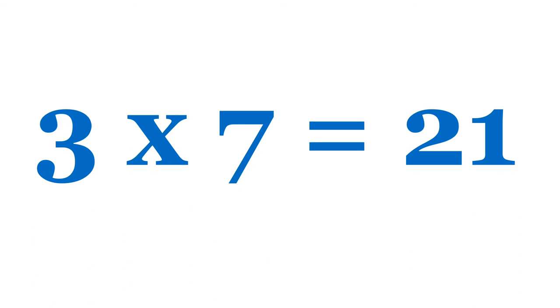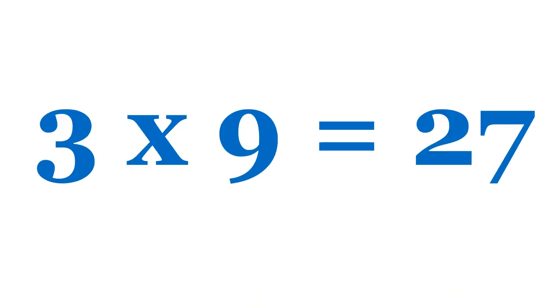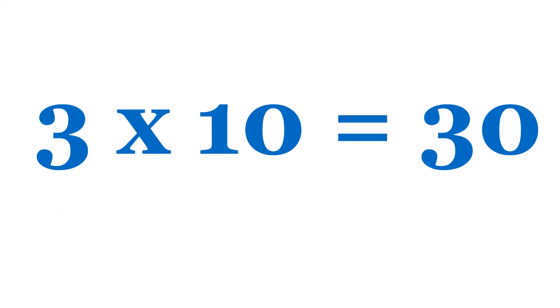3 7s are 21, 3 8s are 24, 3 9s are 27, 3 10s are 30.